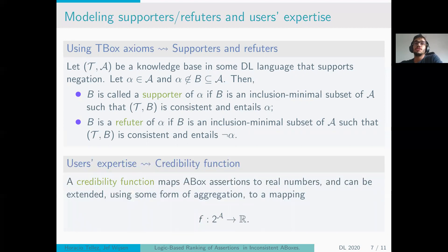We put the user credibility, the user expertise, in a credibility function. A credibility function is a map from the A-box to the real numbers that can then be extended to the subsets of the A-box to the real numbers.